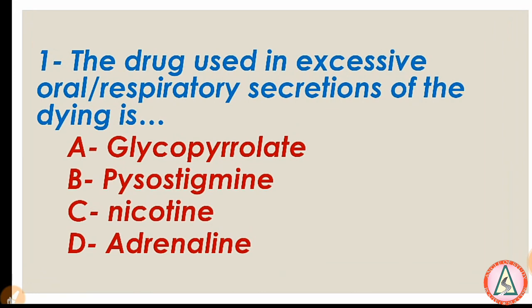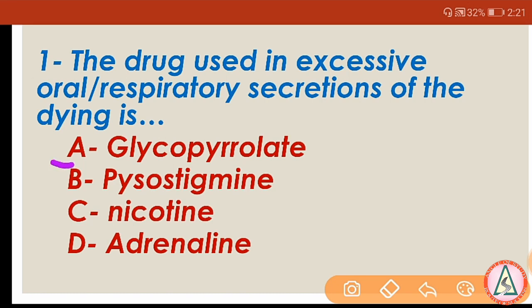Question number 1: The drug used in excessive oral and respiratory secretion of the dying is: A) Glycopyrrolate, B) Physostigmine, C) Nicotine, D) Adenylane. The right answer is Glycopyrrolate. Glycopyrrolate belongs to a class of drugs known as anticholinergics. This drug is used to reduce excessive drooling or excessive oral and respiratory secretions. Glycopyrrolate is more potent than atropine. Terminal respiratory secretions, known as the death rattle or noisy breathing, are often observed in dying persons, so in this case we use Glycopyrrolate.